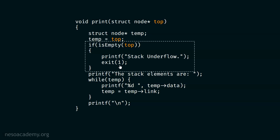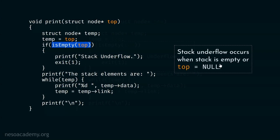We got the stack underflow message, and the process also returned one. There is no doubt that after calling this print function, this piece of code is executed and this condition is actually satisfied — which means that top is equal to null. Stack underflow occurs when the stack is empty or top is equal to null.